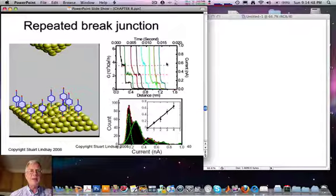And you can see with a repeated number of pulls that these steps occur at exactly integer multiples of some conductance. Here is a histogram where these conductance values are binned, and you can see that there is a value at a certain value of current, then twice that value of current, three times that value of current.